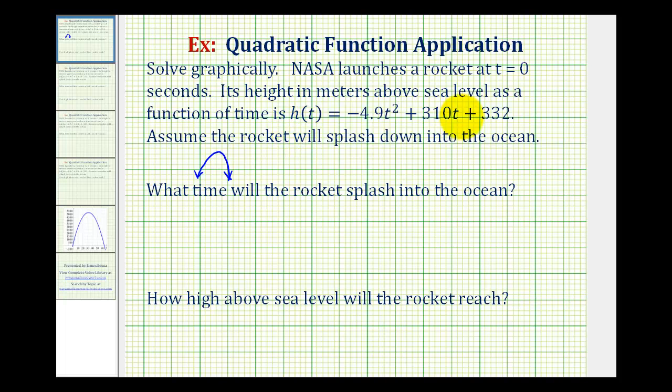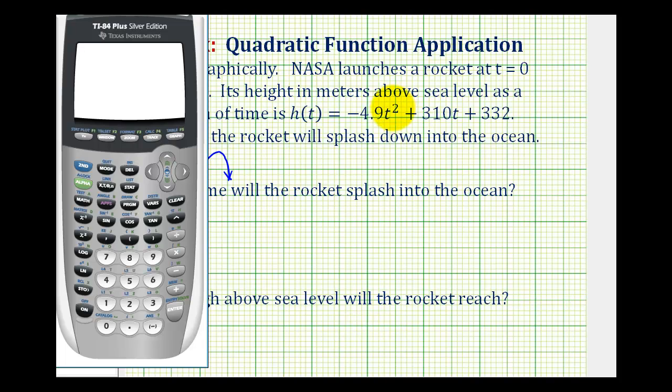So let's see if we can graph this function on the graphing calculator and then answer these two questions. One of the challenging parts about graphing this on the graphing calculator is adjusting the window to get a nice view of the function. We're going to press Y equals, clear out any old functions, type in our new function. Instead of t, we'll use x. So negative 4.9 x squared plus 310x plus 332.